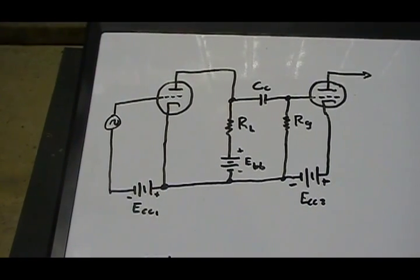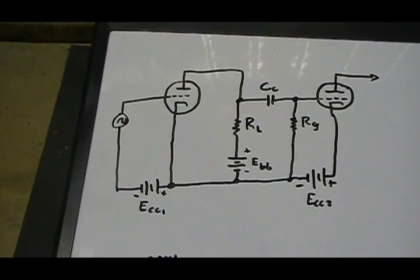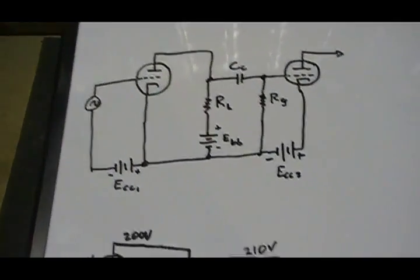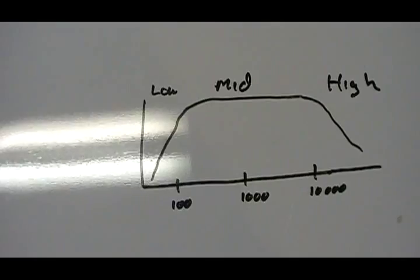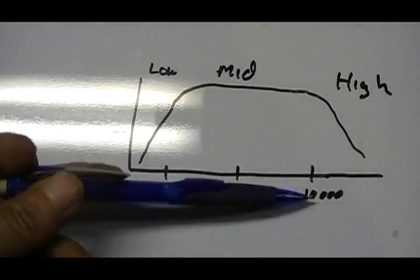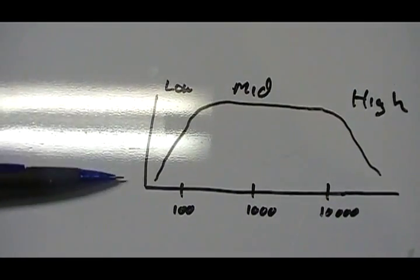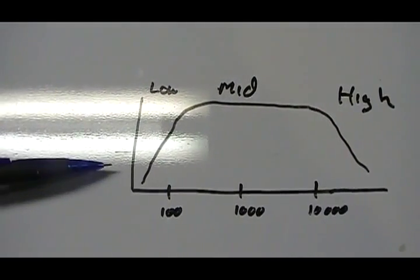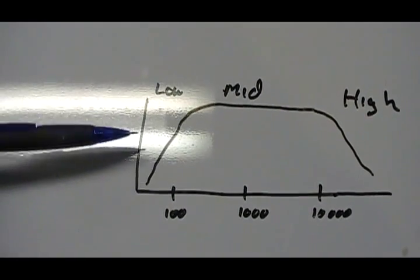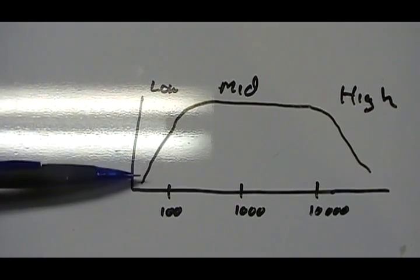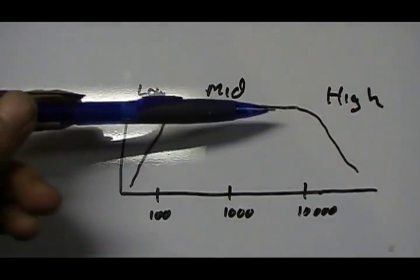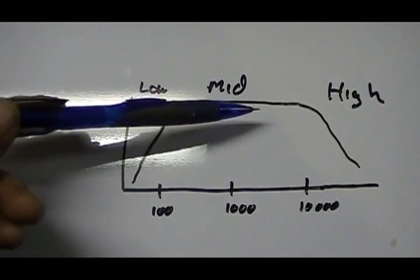Now some of the disadvantages — looking at the frequency response curve, we have frequency on one axis and gain on the other. At low frequencies we start dropping off, the middle frequencies are pretty level with good gain, and at high frequencies we drop off again.